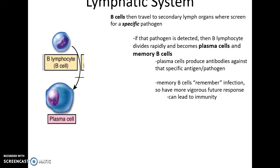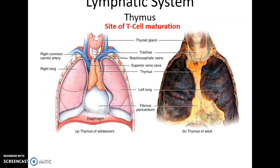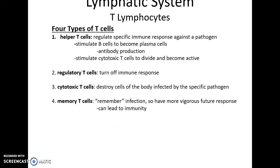If a B cell comes in contact with its specific pathogen, it becomes a plasma cell or a memory B cell. Plasma cells produce massive amounts of antibodies against that pathogen — specifically against antigens on the surface of the pathogen. Memory B cells remember that the infection occurred so that a future infection by the same pathogen will trigger a quicker, more vigorous response, providing immunity against that pathogen.